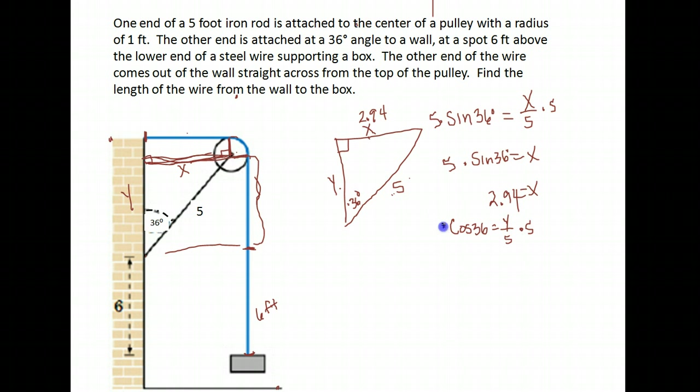We want to solve for y, so we multiply both sides by 5. Since this is a 36-degree angle, make sure your calculator is in degree mode and take 5 times the cosine of 36. We get 4.05 approximately.